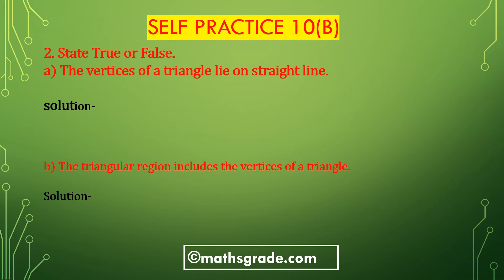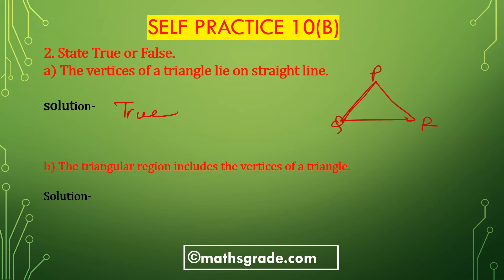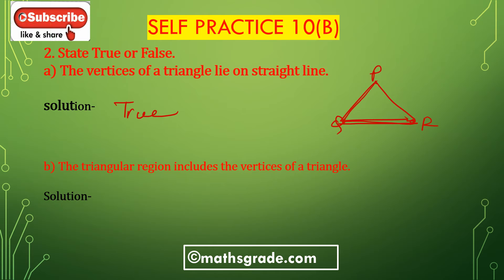Now we'll solve question number 2 — State true or false. First bit A: The vertices of a triangle lie on a straight line. This is true. The vertices P, Q, R each lie on a straight line, so the vertices of a triangle lie on the straight line. This is true.